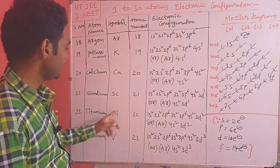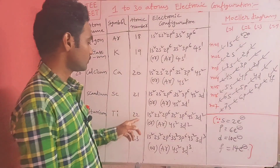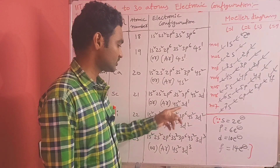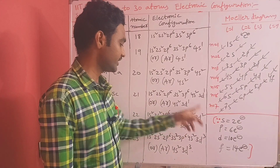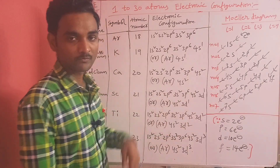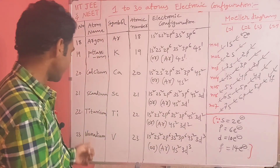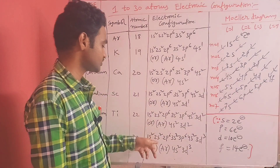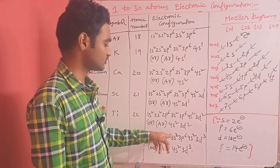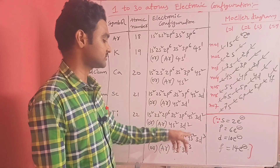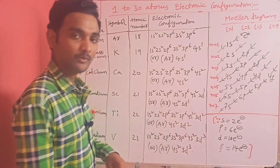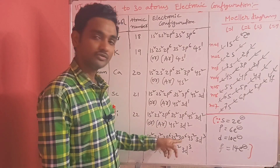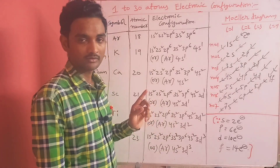Titanium (Ti), atomic number 22: [Ar] 4s2 3d2. Vanadium (V), atomic number 23: 1s2 2s2 2p6 3s2 3p6 4s2 3d3, overall [Ar] 4s2 3d3.